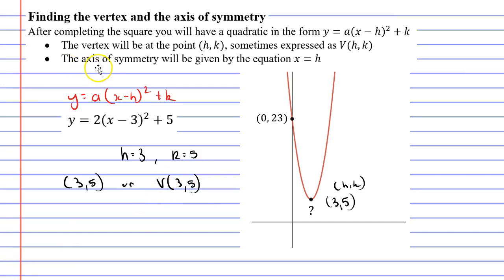We can also find the axis of symmetry when equations have been written in this form. Looking at the vertex we have here, it's (3, 5), which means at this point lines up with the x value of 3 and the y value of 5. Now if I was to draw the axis of symmetry it would be a dotted line that passes through the x value of 3. We would say that the axis of symmetry has the equation x equals 3, because it passes through the x value of 3.